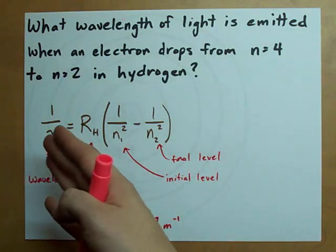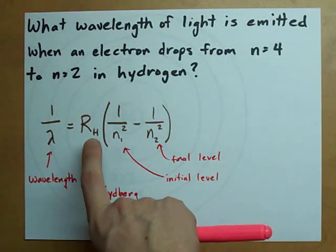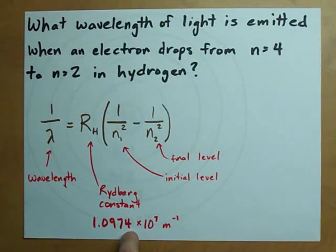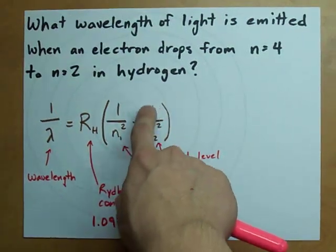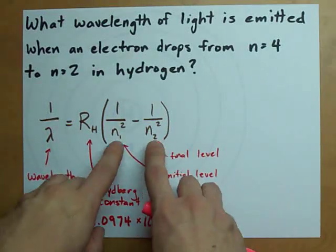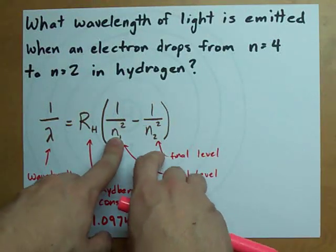When you're asked for the wavelength coming from hydrogen, you've got a formula for it. One divided by the wavelength is the Rydberg constant times one over the initial energy level squared minus one over the final energy level squared. This accounts for the fact that it's dropping from the fourth to the second.